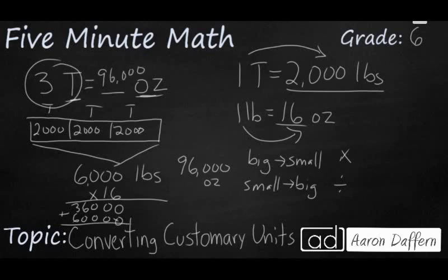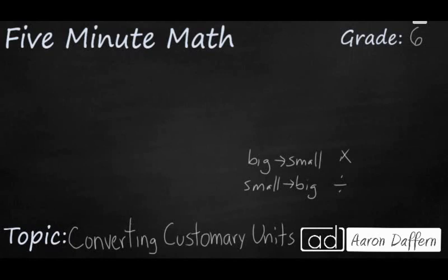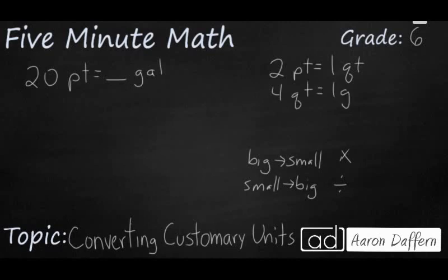Let's look at another example. So let's change to liquid capacity. Let's say we have 20 pints, and we want to convert that into gallons. Well, remember we need to do two things. First, we need to see how the two units relate to each other. We know that 2 pints make a quart, and then it takes 4 quarts to make a gallon, just like it takes 4 quarters to make a dollar. So that's step one.